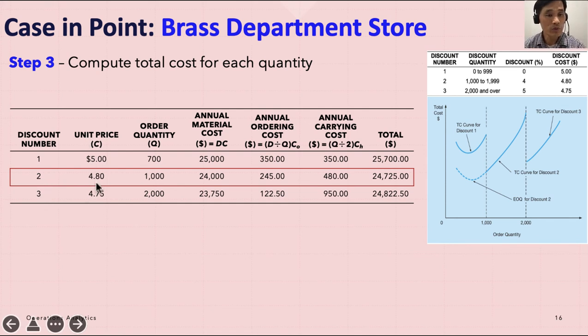For discount number two, we have unit price $4.80, and the quantity is 1,000 rather than the 714. We use 1,000 there, and your material cost is going to be 4.8 times 5,000, which gives you $24,000. Your ordering cost is 245, and annual carrying cost is 480. So this is not optimal; they are not the same because we are not using 714 as the economic order quantity. If it was 714, then it would have been the same.